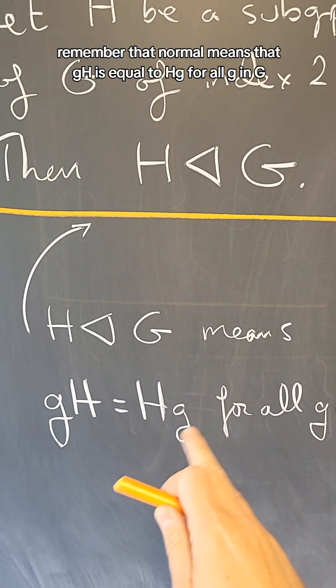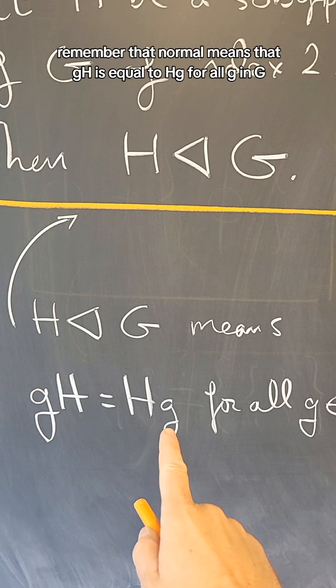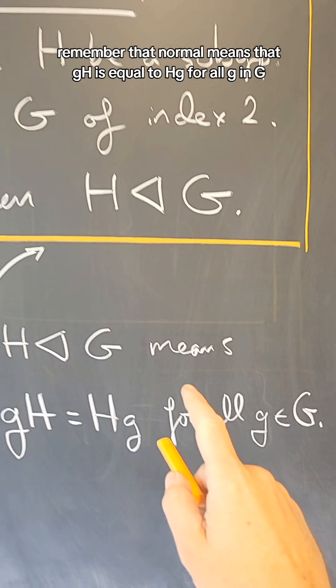Remember that normal means that gH is equal to Hg for all g in G.